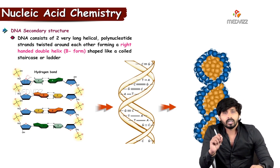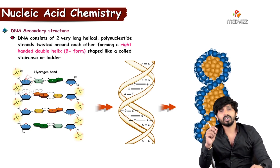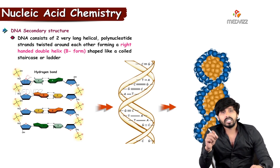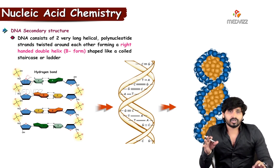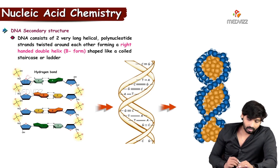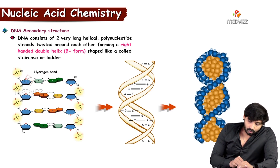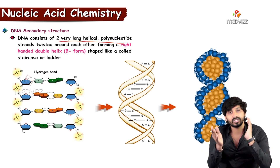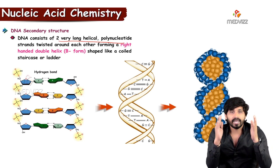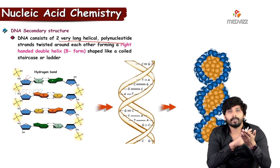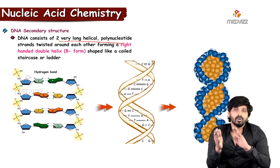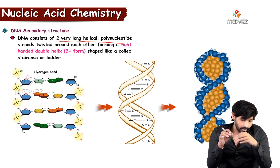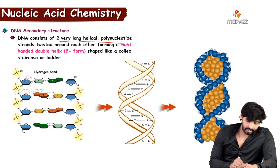The DNA secondary structure is a very popular model explaining DNA structure. It was proposed and discovered by James Watson and Francis Crick using the technique of X-ray crystallography, which revealed the helical structure of DNA. According to this secondary structure, DNA consists of two very long helical polynucleotide strands twisted together like a ladder. If you take a ladder — normally it is straight — and twist it, that is how the DNA appears.